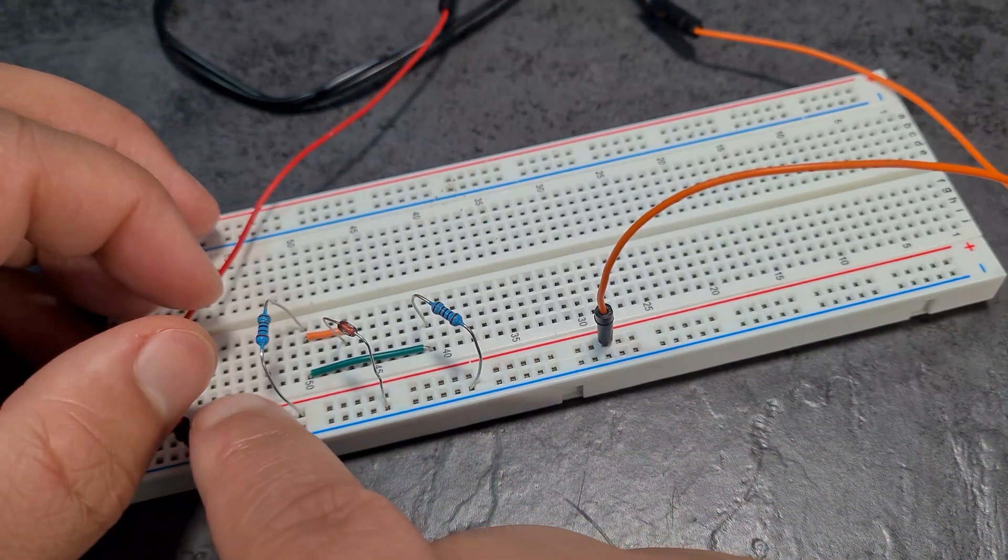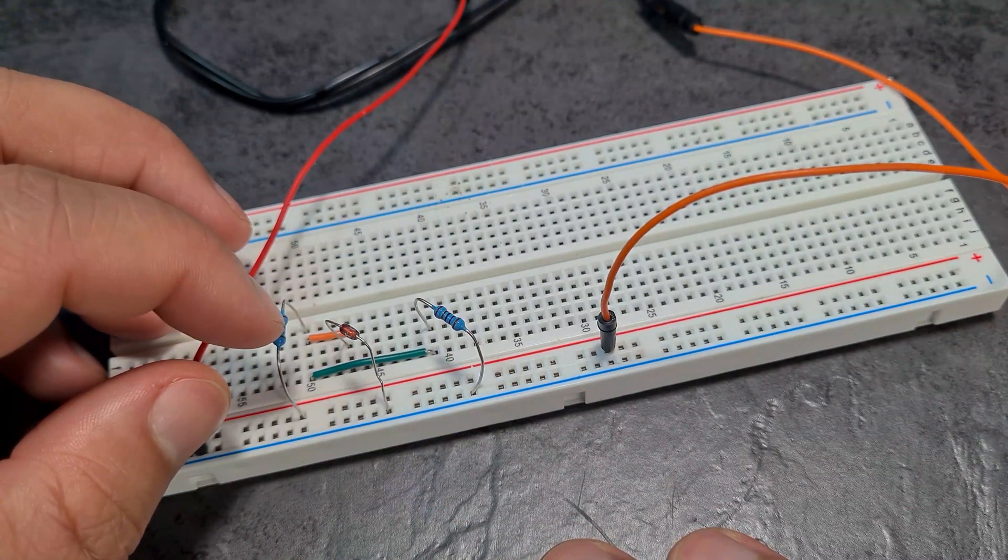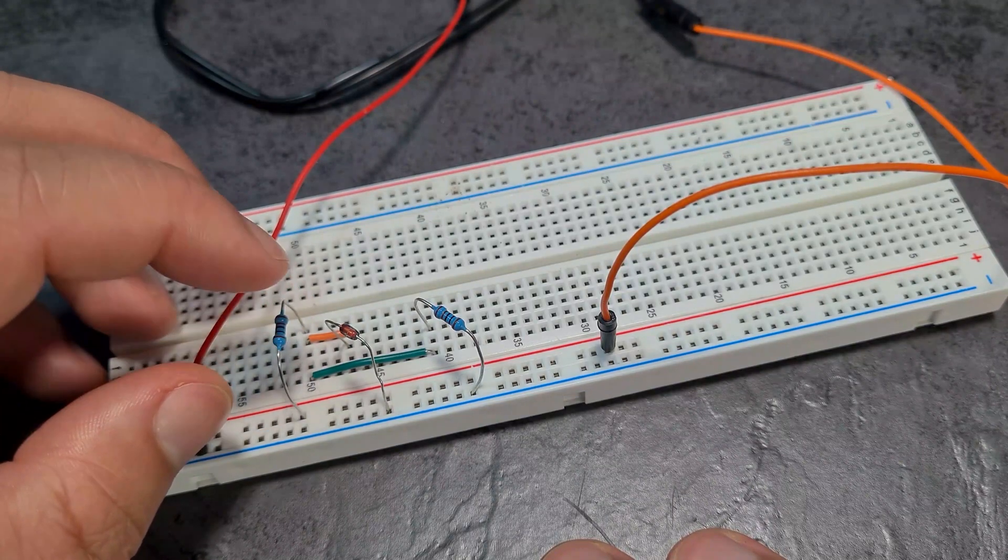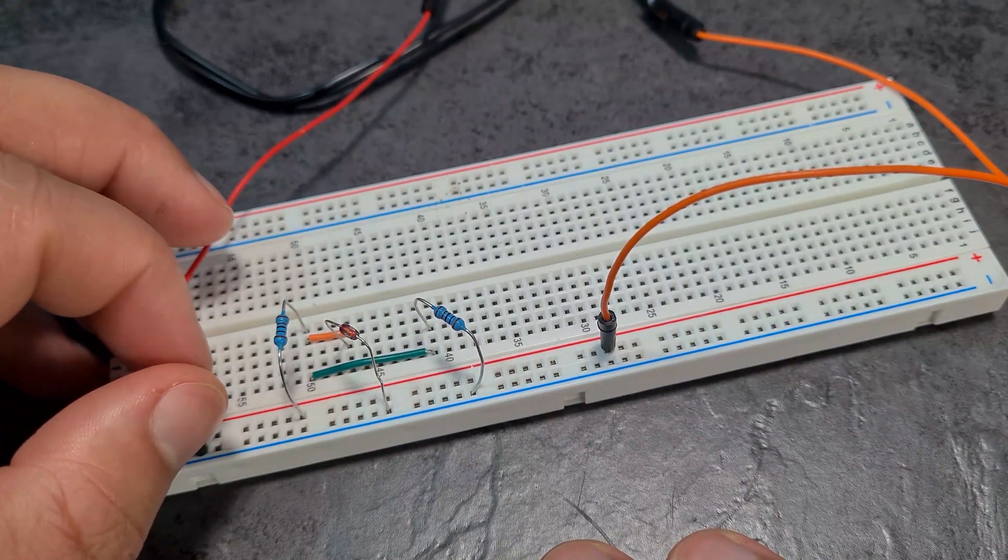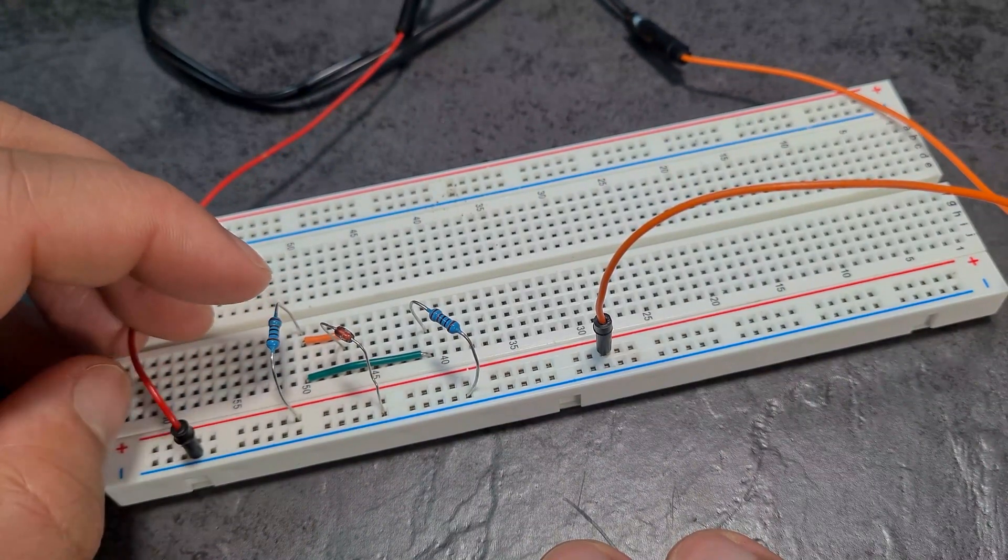Now one thing to know if you are doing this is that depending on how much current you get, you're obviously going to need certain power rating resistors. So I'm using a 1 kilo-ohm resistor here. If I use a lower ohm which gives out more current, then this would heat up and start to melt. So in that instance there you'd have to use a higher power rated resistor.